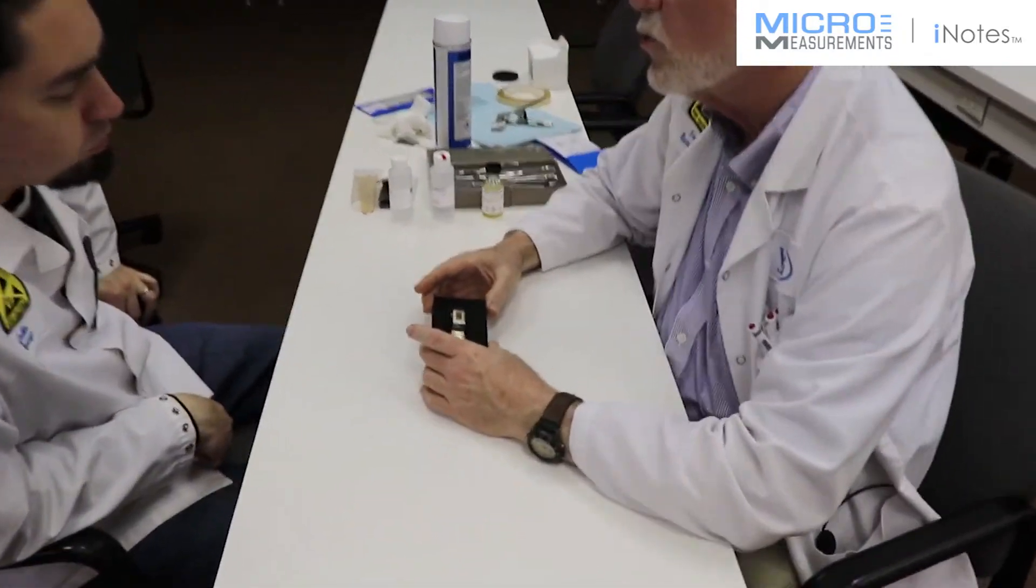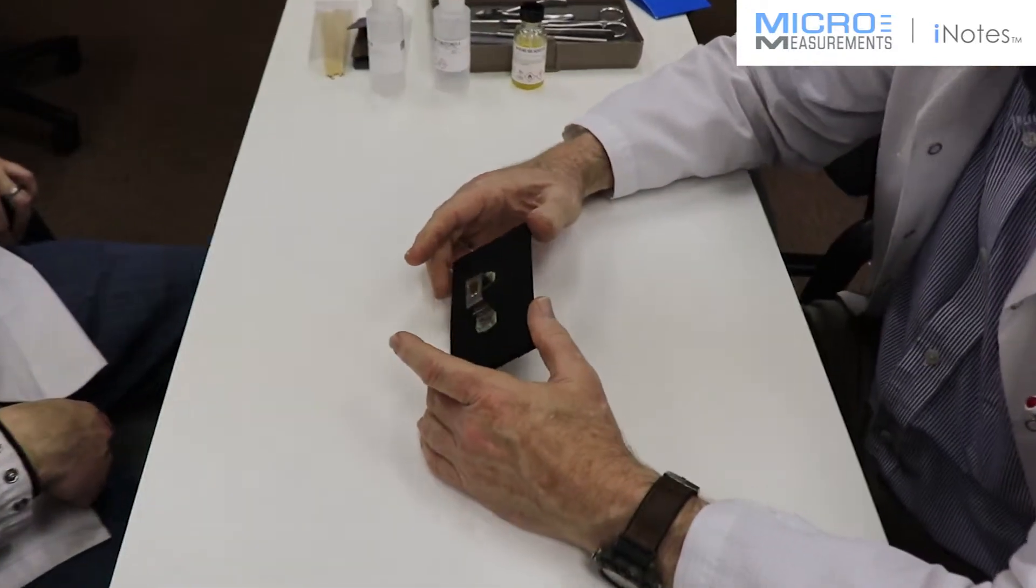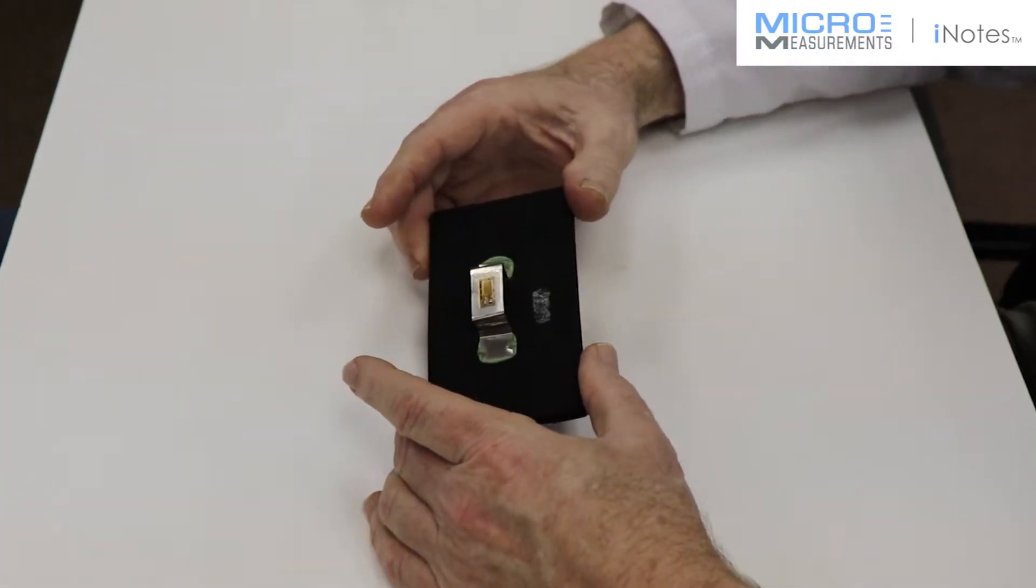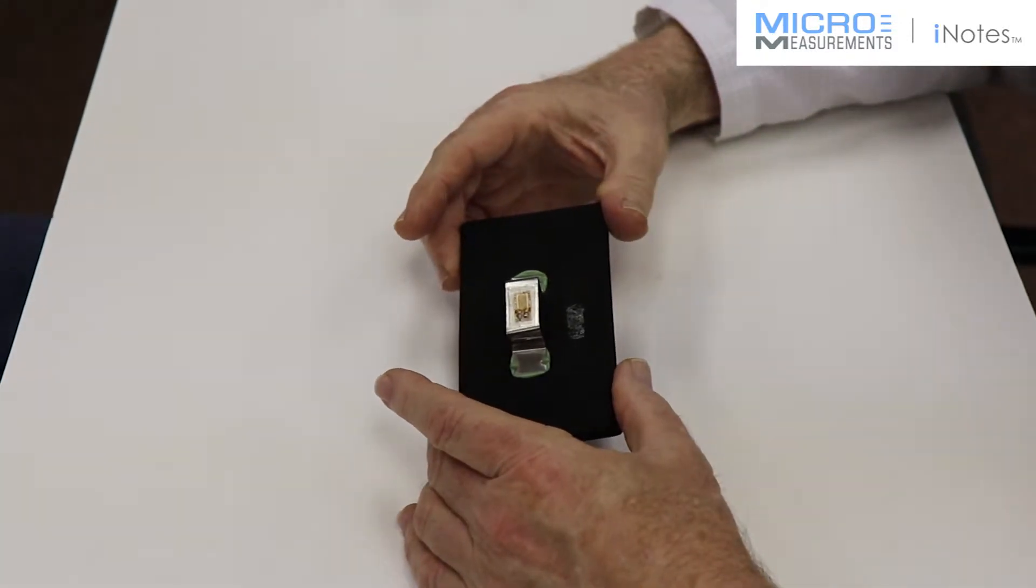A clip gauge is used when you encounter a situation where a bonded foil strain gauge cannot make the elongation capability, somewhere above 20% strain.